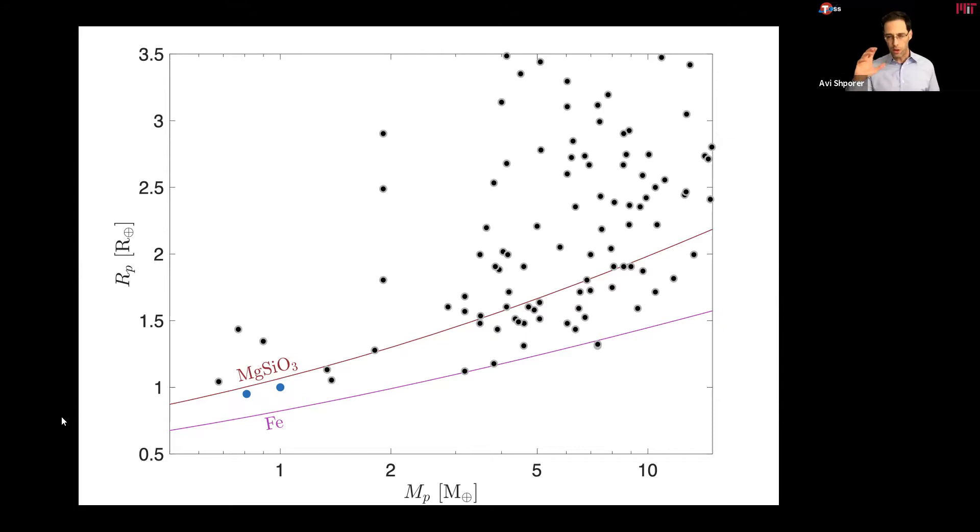There is a lot more information in this plot. I'm not going to go through all of it, but one thing you can immediately see is that there are actually many planets between the size of Earth and Neptune, which is outside the scale of this plot. But Neptune is 3.9 times the radius of the Earth. So while in the solar system, there are no planets between the size of Earth and Neptune, they're actually quite common around other stars.